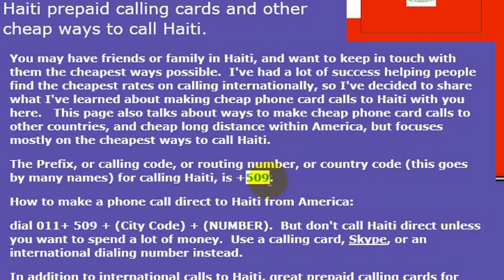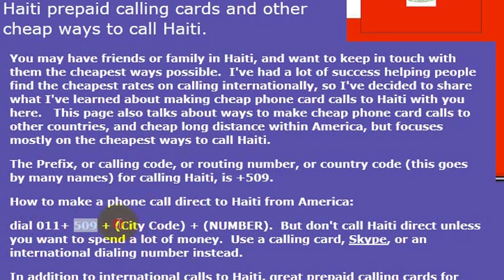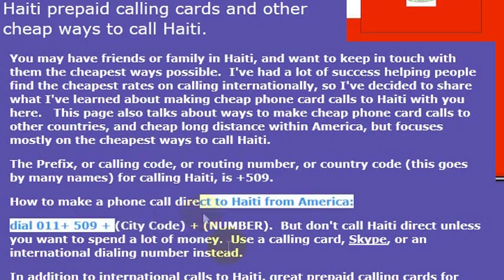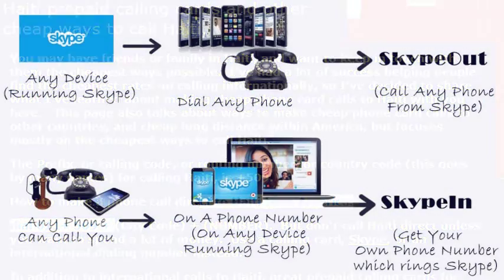So if you were picking up a phone in the United States and making a phone call to Haiti, you would dial 011, then 509, which is the country code, and then the phone number that you are wanting to dial.